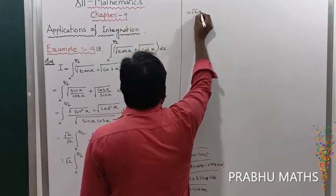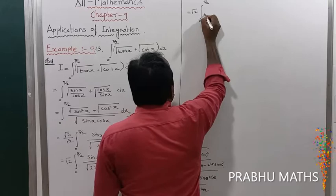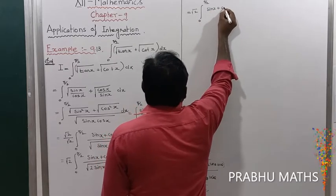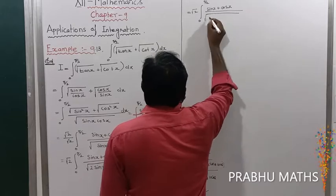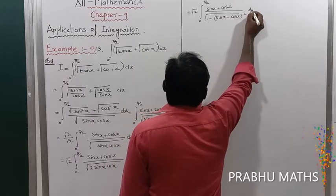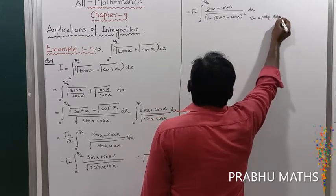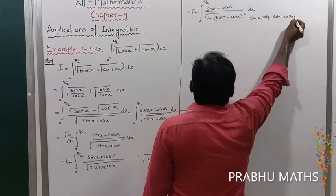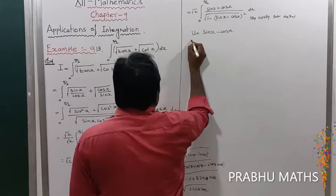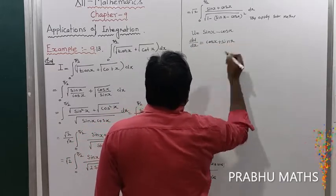So that is equal to √2 · ∫₀^(π/2) (sin x + cos x) / √(1 − (sin x − cos x)²) dx. By applying the substitution method, let u = sin x − cos x, so du/dx = cos x + sin x.